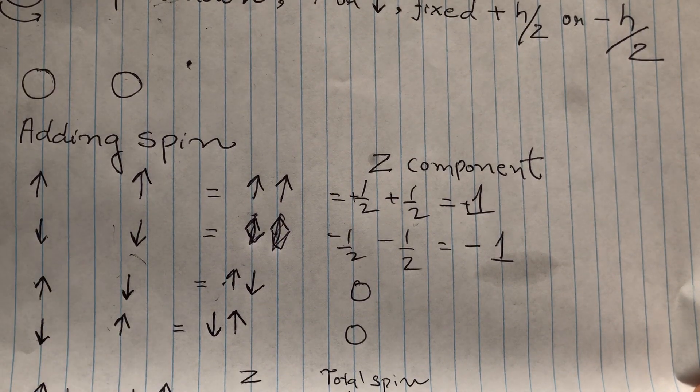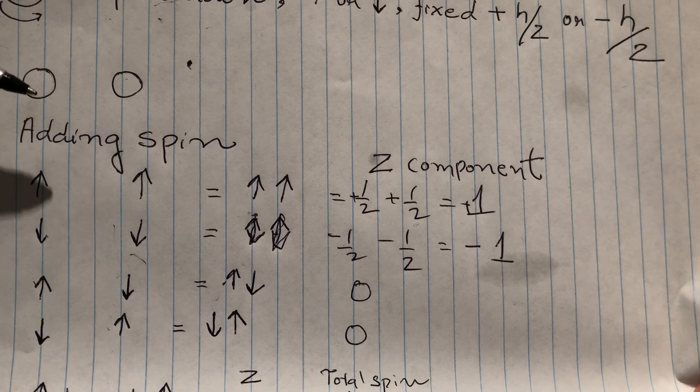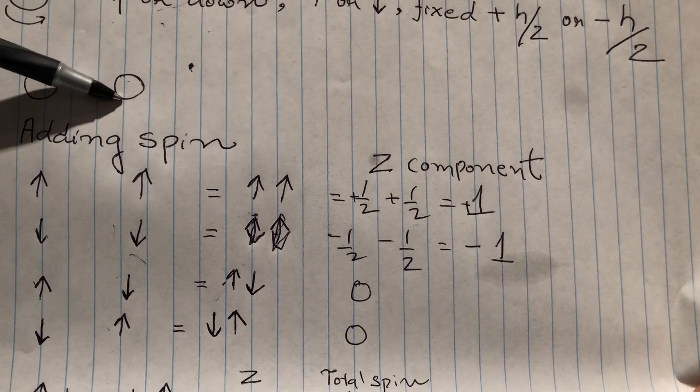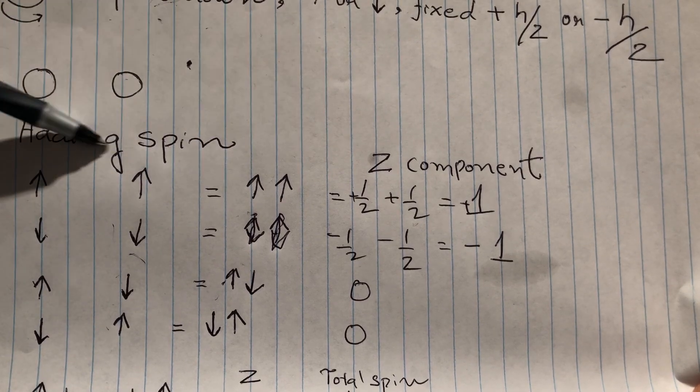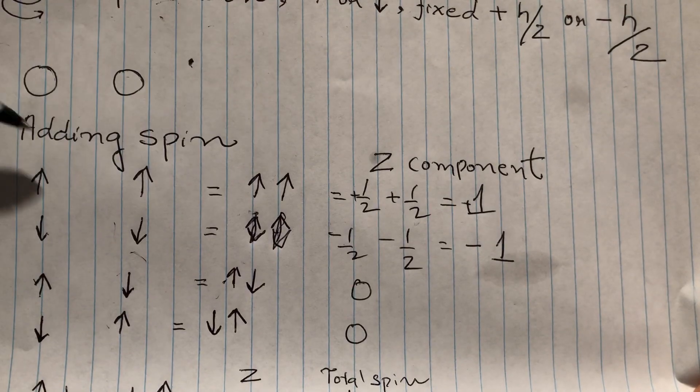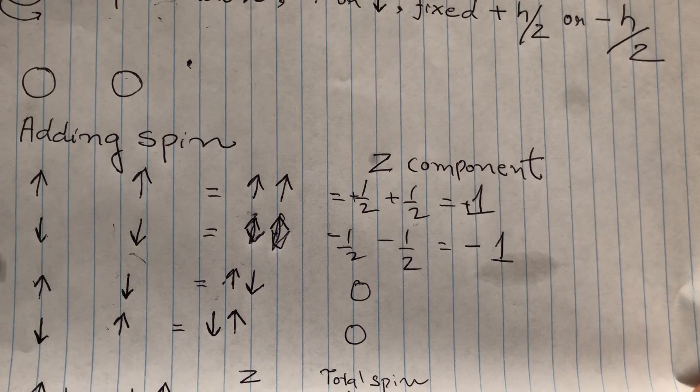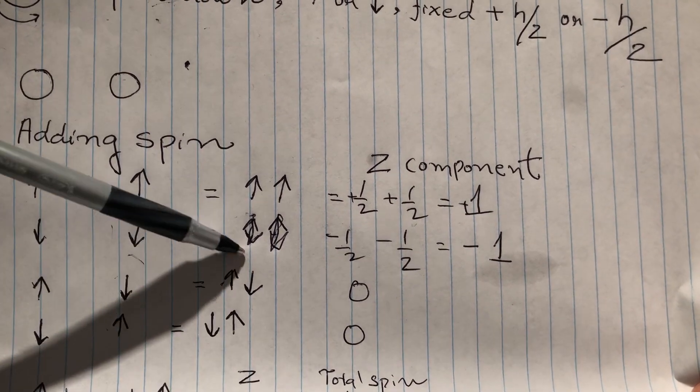The reason is that there is no difference between these two electrons. They're absolutely identical. And due to uncertainty principle, you have no idea which is electron one and which is electron two. They are indistinguishable.